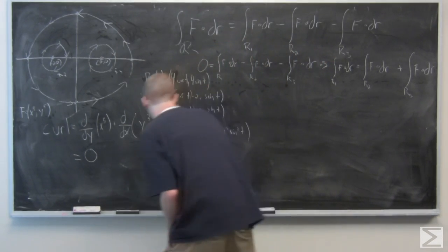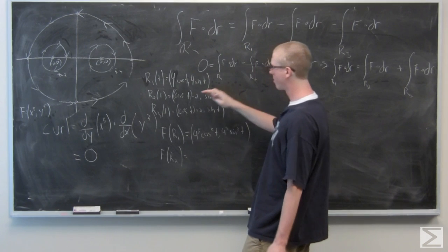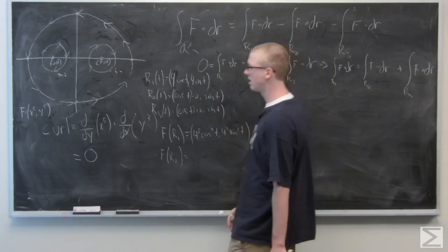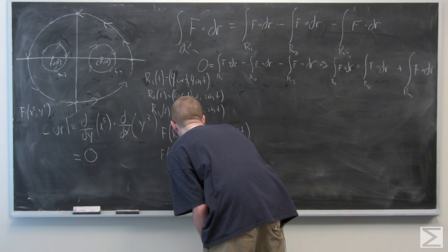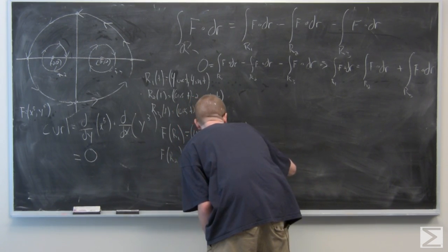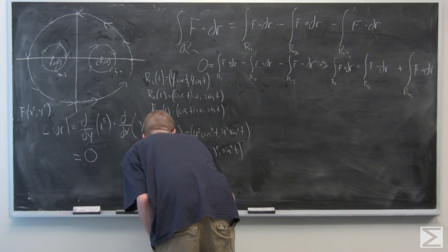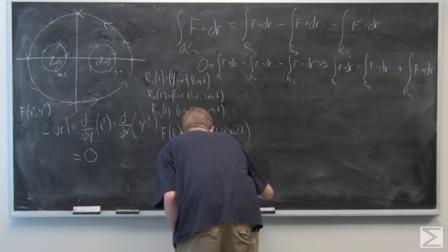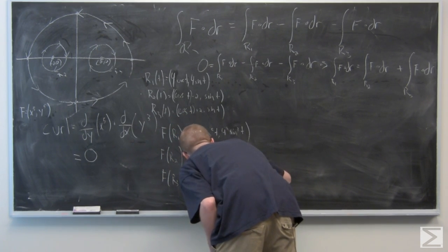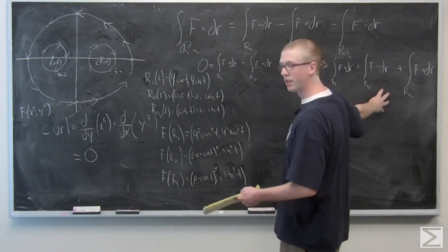For f(r2), we plug in (cos(t) − 2) for x and sin(t) for y. The same process applies for f(r3), plugging in (cos(t) + 2) for x and sin(t) for y. Now that we have all of our f values, we can plug into the integral.